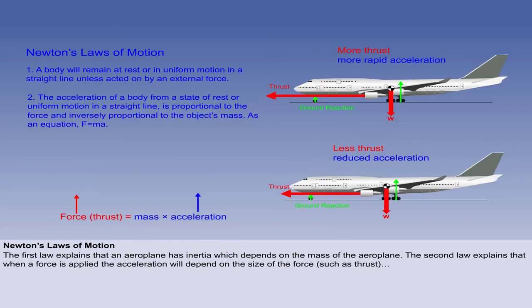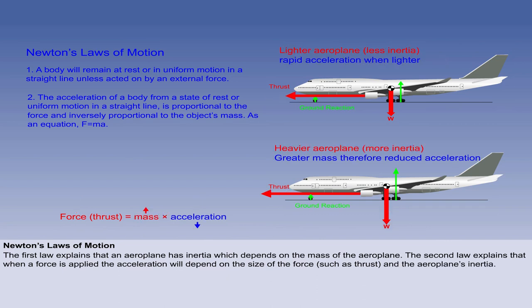Newton's second law shows that when a force is applied to a body, its acceleration is proportional to the size of the force, and inversely proportional to the object's mass, because a heavier object has more inertia. Newton's second law has obvious implications on take-off, as the aeroplane must accelerate to reach its take-off speed, and will do so quicker if the engine thrust is greater, or if the aeroplane has less inertia because it is lighter.